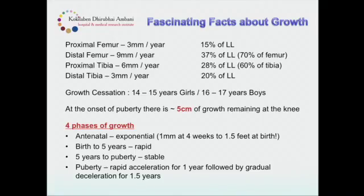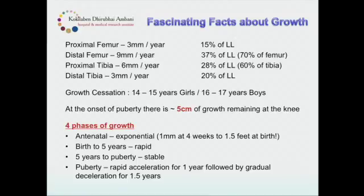Some really fascinating facts come out from knowing growth charts. The proximal femur grows at roughly 3 mm per year and contributes just about 15 percent to total lower limb length. The distal femur is the big daddy — 9 mm per year — and this growth plate is the most important for limb length. Any damage by trauma or infection can result in very severe limb length discrepancy, contributing about 33–37 percent of lower limb length. The proximal tibia always grows at 75 to 80 percent of the distal femur throughout life.